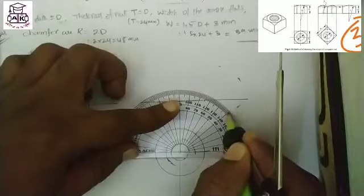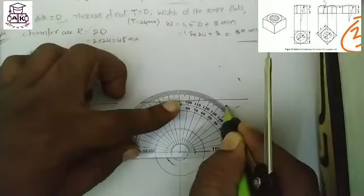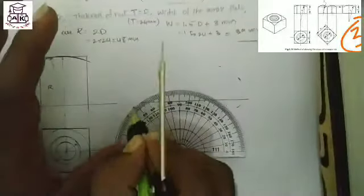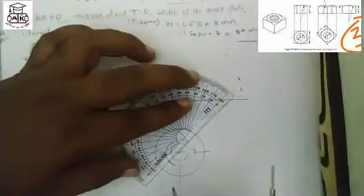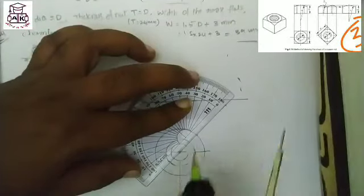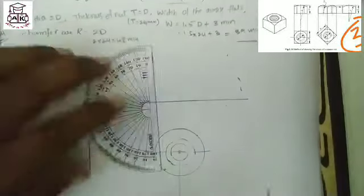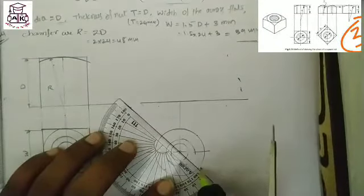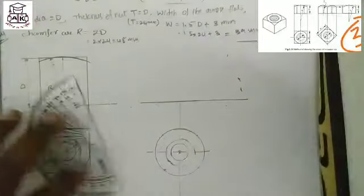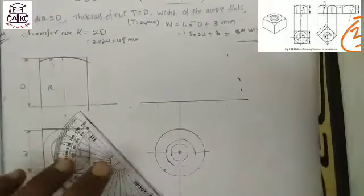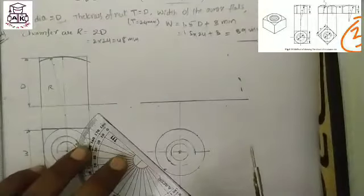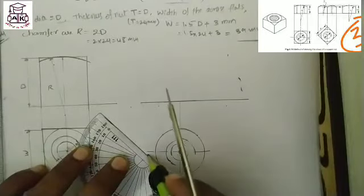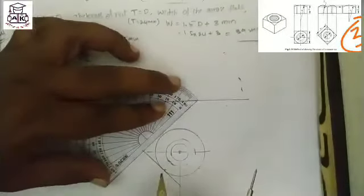With the help of a protractor, mark 45 degrees. That means the circle is divided into 4 parts for making the square box.